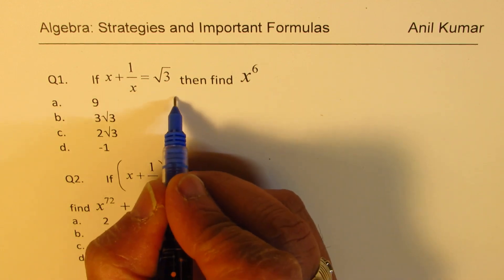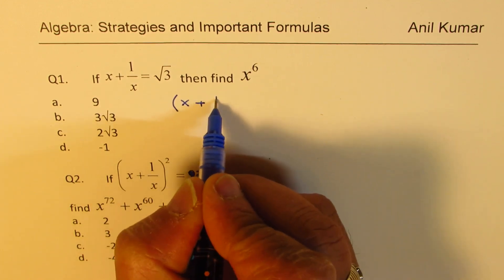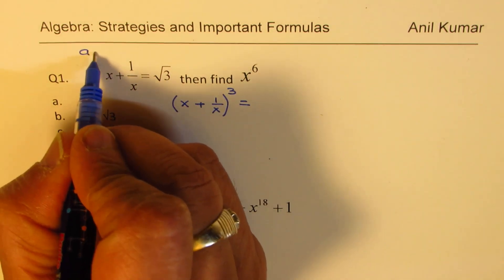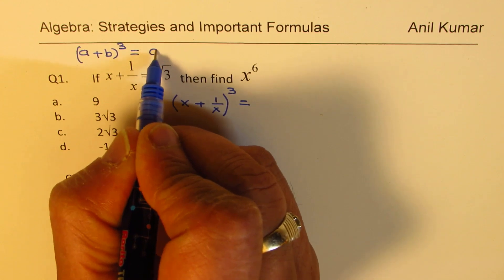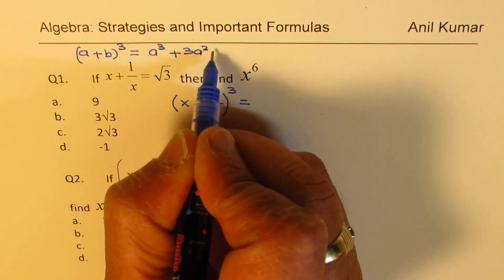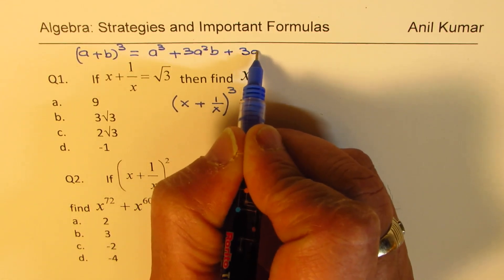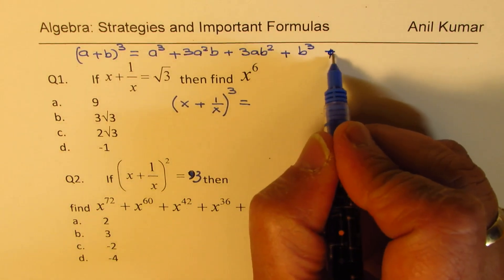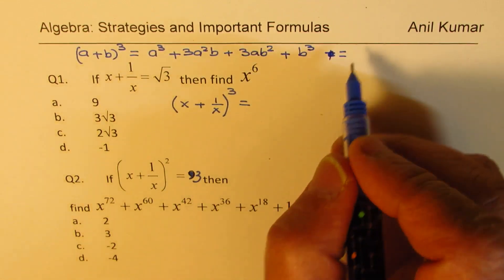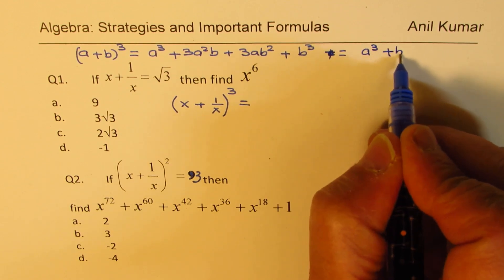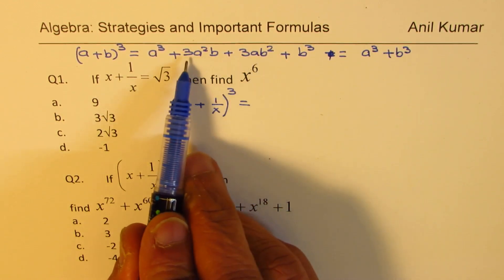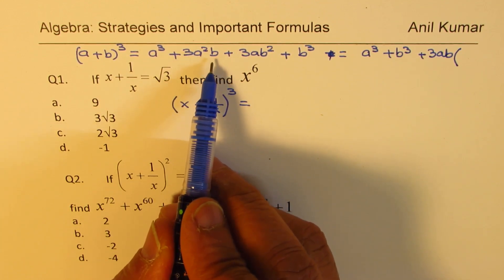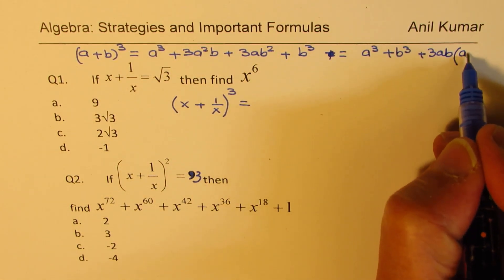What we are going to do here is, to begin with, we'll take the cube of x plus one over x. I hope you remember the formula for the cube, which is a plus b whole cube is equal to a cube plus 3a squared b plus 3ab squared plus b cube. You could actually rewrite this formula in a factored form: a cube plus b cube, and the terms in between have 3ab as common, so plus 3ab times a plus b.